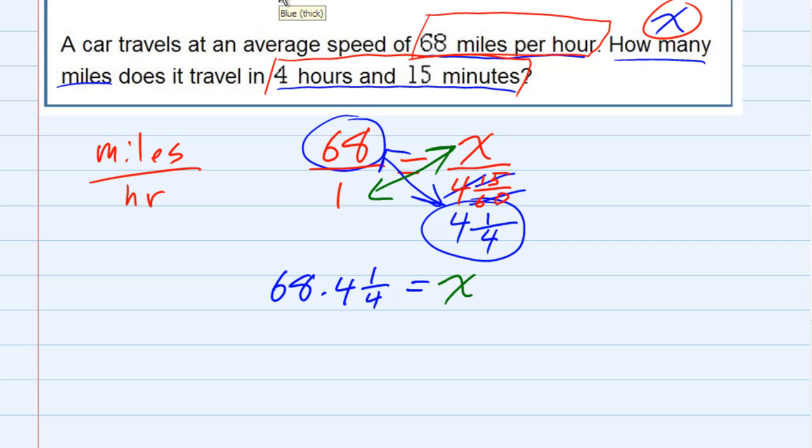I've got a mixed number being multiplied with a whole number. So what I want to do is write that whole number as a fraction, 68 over one,